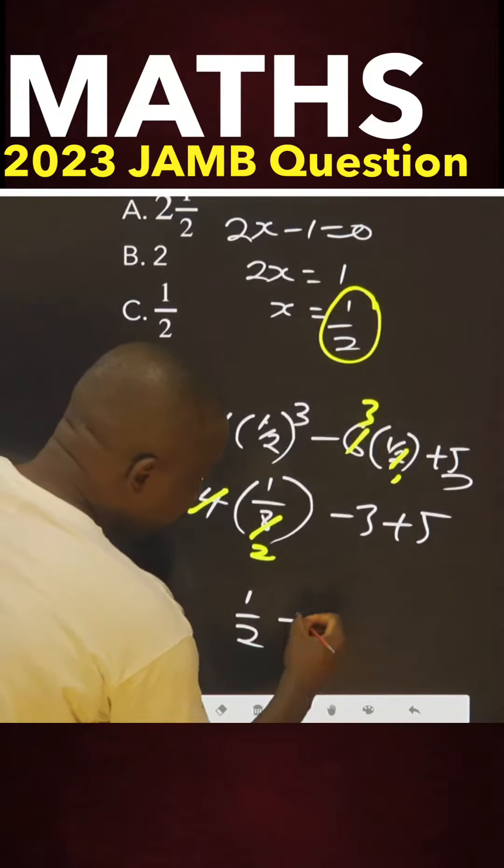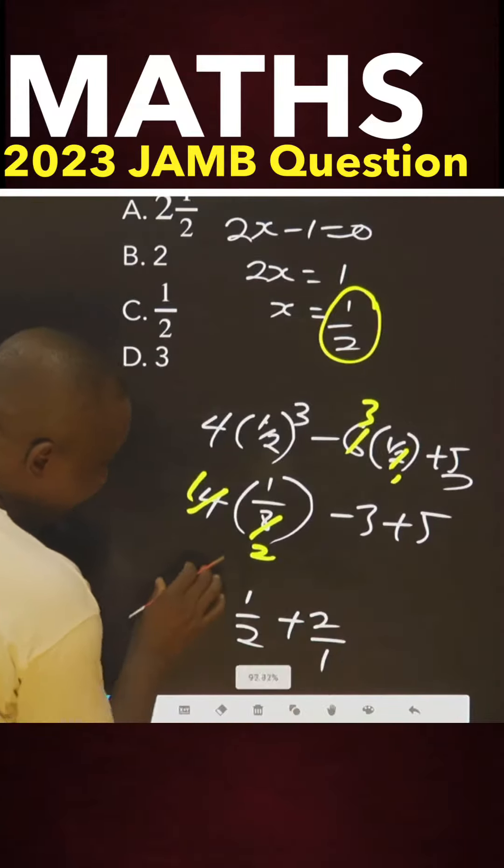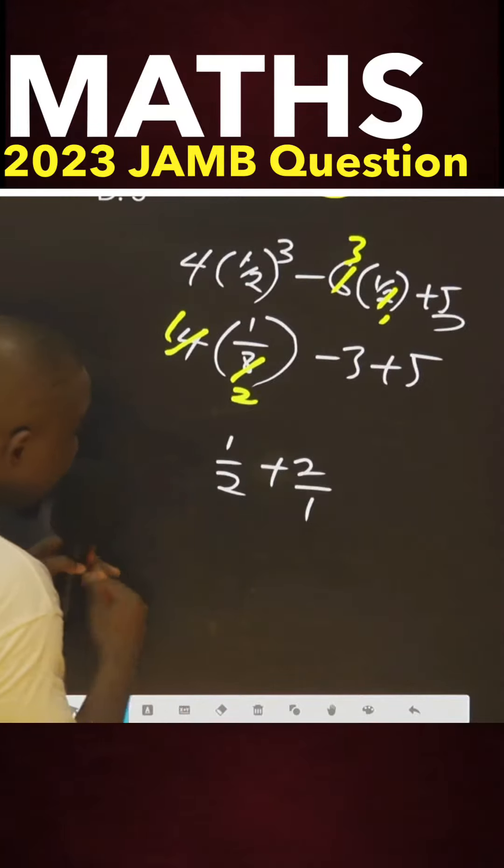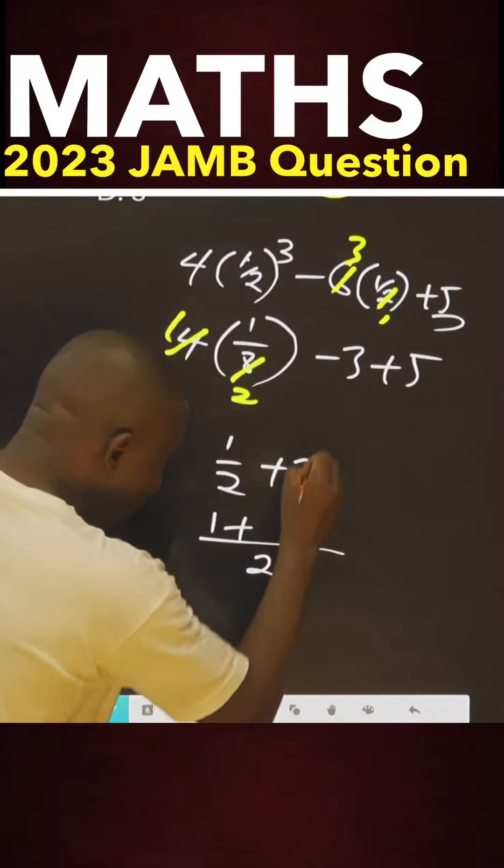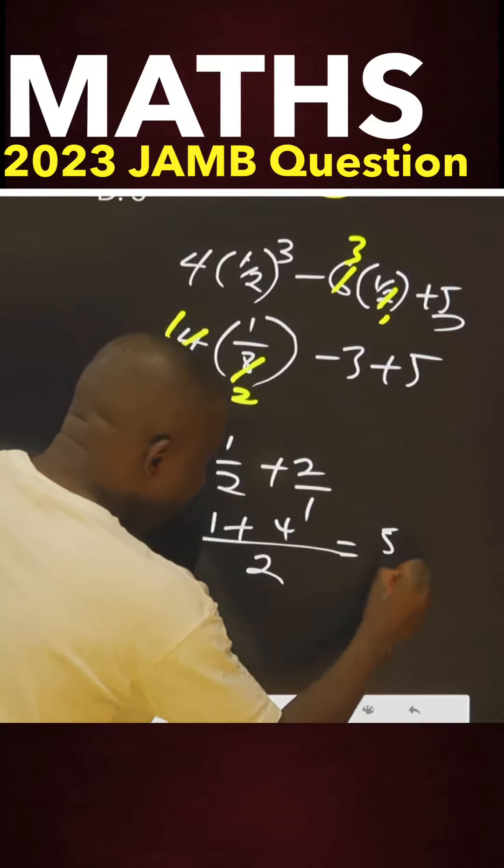This 2 will give us plus 2 over 1. So this one now, find the LCM. 2 into this is 1 multiplied by this is 1, plus this is 2, that is 4, equals to 5 over 2.